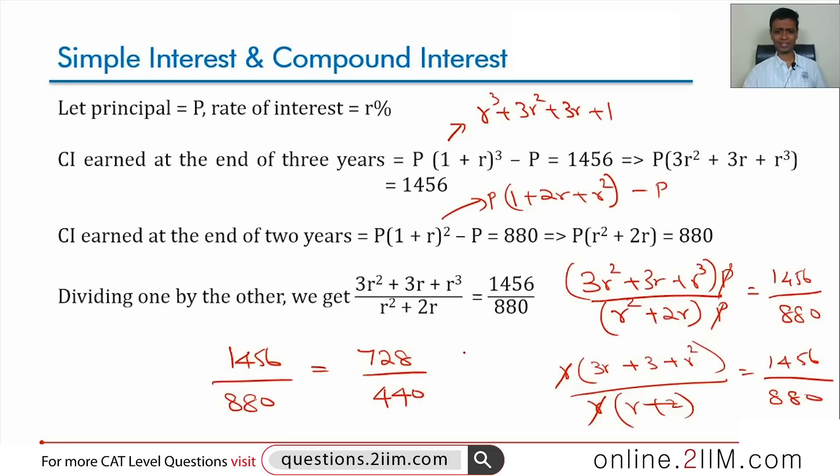I am going to write this differently. Call it as 0.728 by 0.44. 1 plus R whole cube minus P becomes 0.728. 1 plus R whole square minus P becomes 0.44. If I had not subtracted P, the amounts, if I can think of it as, do these two numbers ring a bell, 0.728 by 0.44.